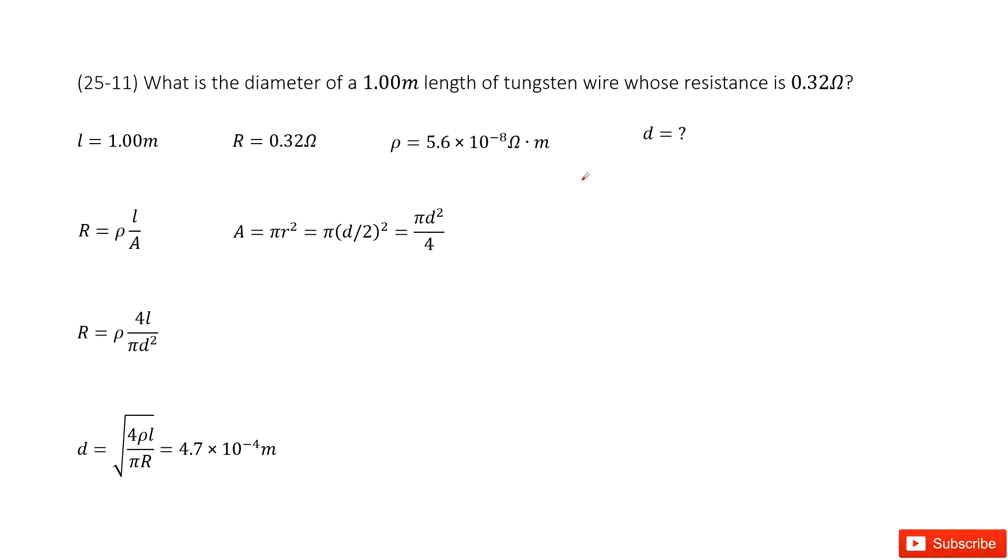So you can see we have a wire, and we need to find its diameter. Now let's see what quantities are given. First, the length is 1 meter, and then the resistance is given. Also, the material for this wire is provided.